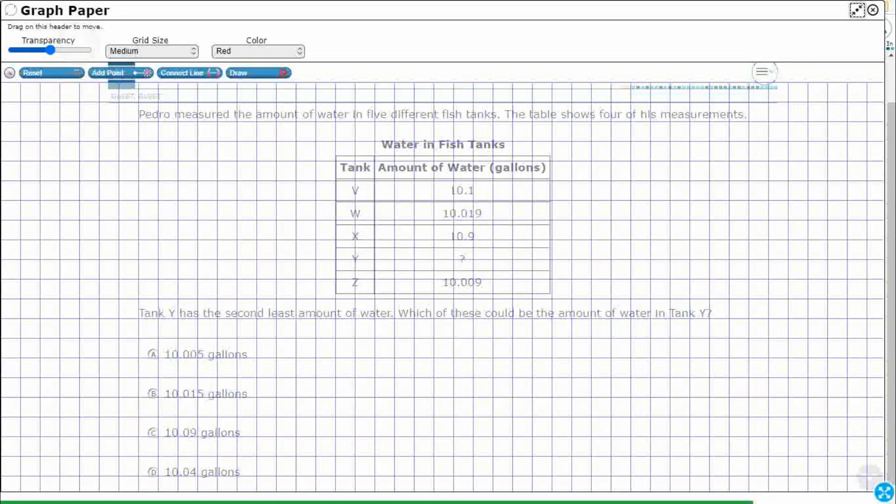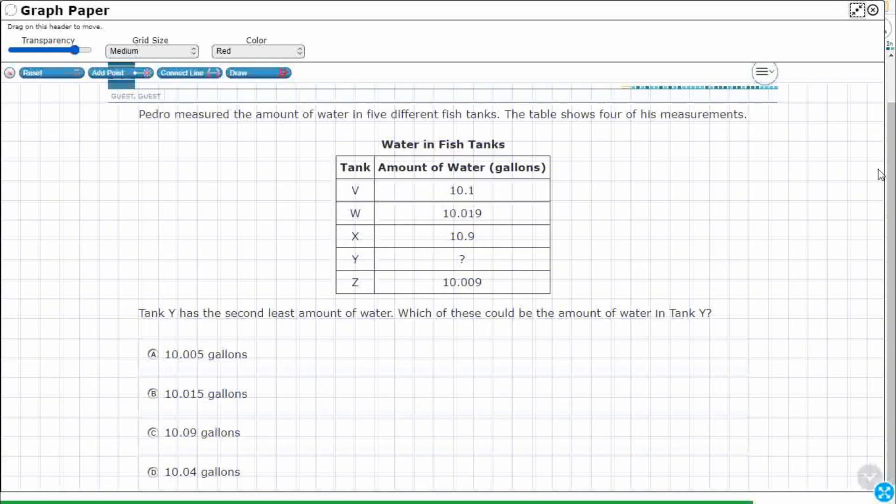I'm going to increase my transparency and hit that draw button right there. So, I need to put these in order, looks like, from least to greatest. And you notice that they've got these centered, so my decimal points are all over the place.